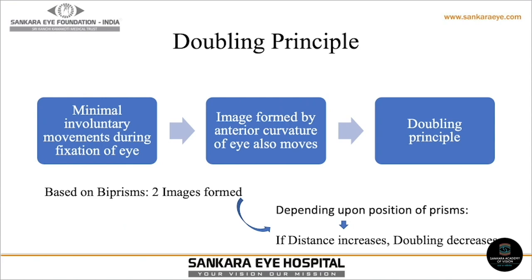The doubling principle is unique in the Bosch and Lomb keratometer because during minimal involuntary movements during fixation of the eye, the image formed by the anterior curvature of the eye also moves with those minimal movements of the eye.